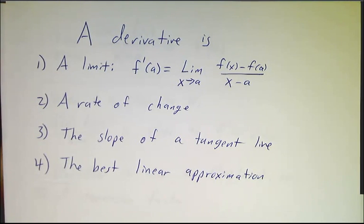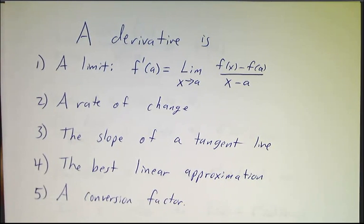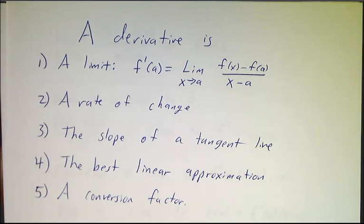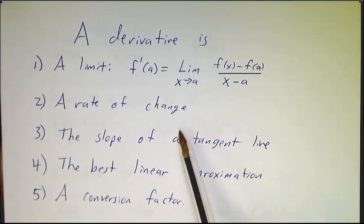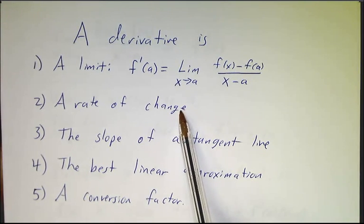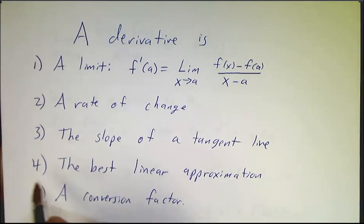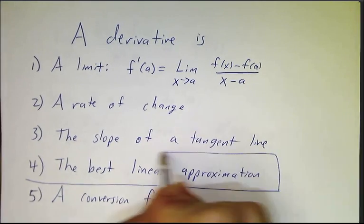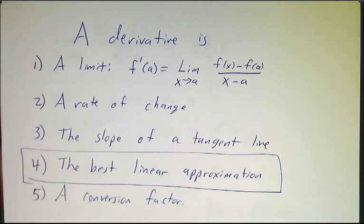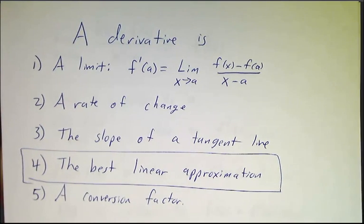We saw that it gave the best linear approximation to a function. We saw that it was a conversion factor. We used this picture to understand the chain rule. We used rates of change to do a bunch of physics problems. Today, we're going to concentrate on the idea of a derivative giving you the best linear approximation to a function.